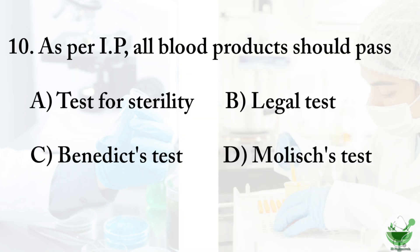Question number ten: as per IP (Indian Pharmacopoeia), all blood products should pass — option A: the sterility test, option B: legal test, option C: Benedict test, option D: Molisch test. The correct option is A, test for sterility.